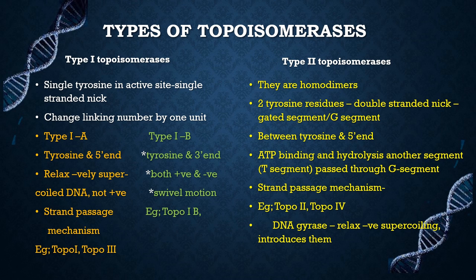Type 2 topoisomerases are homodimers. They contain two tyrosine residues that create double-stranded nicks on a duplex called the gated segment or G segment, and form a covalent intermediate between tyrosine and the 5' end. Through a conformational change induced upon ATP binding and hydrolysis, another segment called the transfer segment (T segment) is passed through the gap created in the G segment. They follow a strand passage mechanism. Examples include topoisomerase 2, topoisomerase 4, and DNA gyrase.